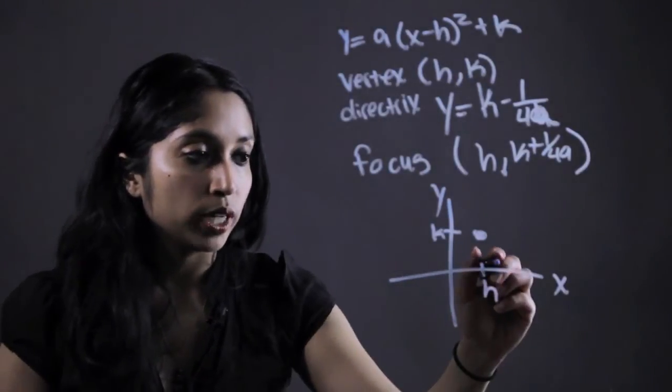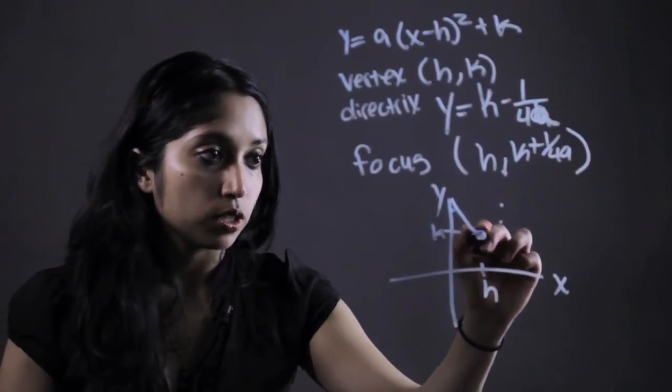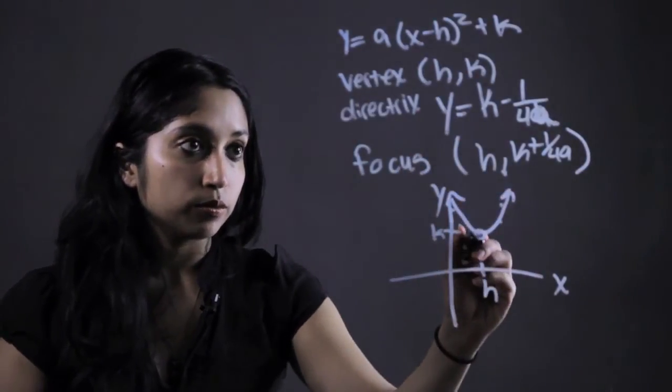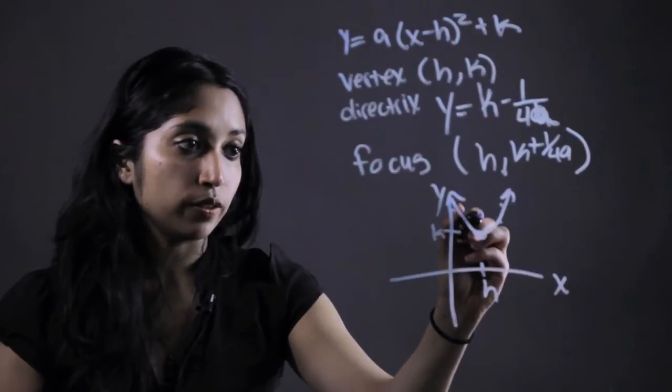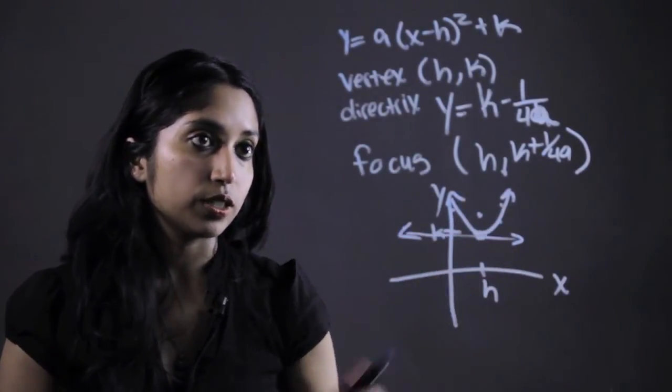So you would just plug in a couple points, figure out how your parabola is shaped, draw it in right there, and then just label vertex, label that focus, and graph that value for the directrix.